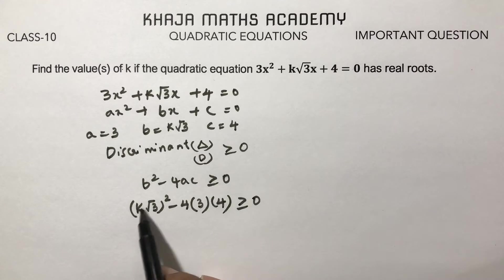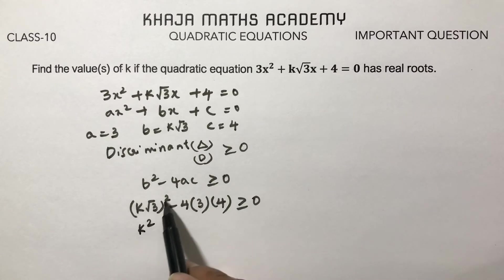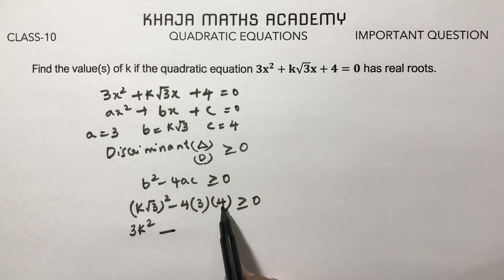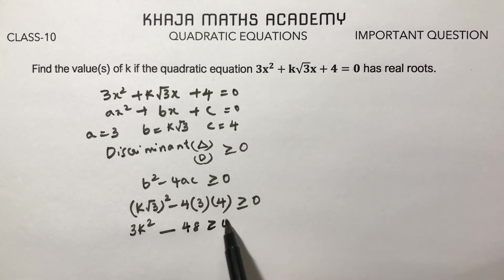Here (k√3)² = 3k². So 3k² - 48 ≥ 0, since 4 × 4 = 16 and 16 × 3 = 48.